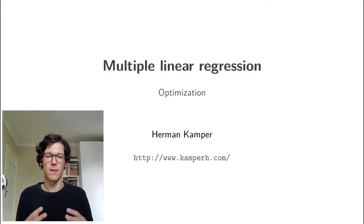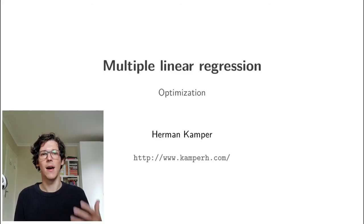In the previous video we defined the multiple linear regression model and looked at the loss function for this model, how the squared loss works with multiple linear regression. We've written out the loss function in matrix form and now in this video we will actually optimize the parameters by taking the derivative of the loss function and setting that equal to zero.